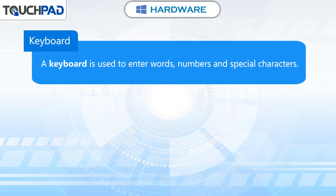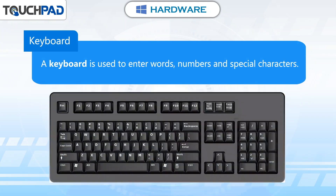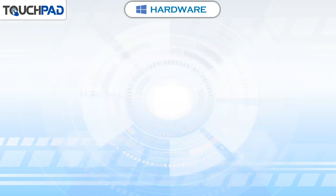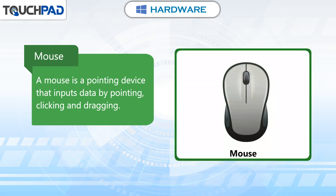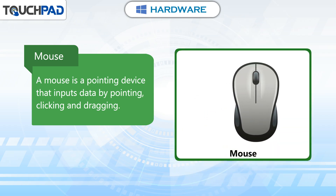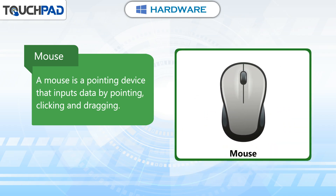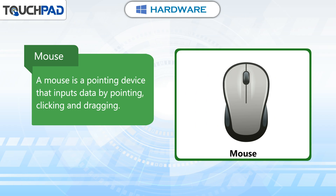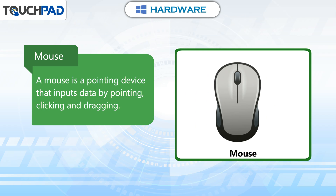Keyboard. A keyboard is used to enter words, numbers and special characters. Mouse. A mouse is a pointing device that inputs data by pointing, clicking and dragging.